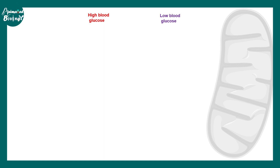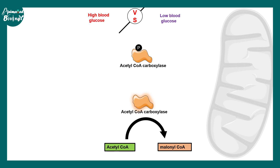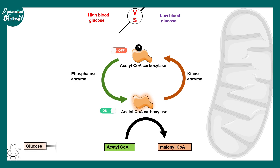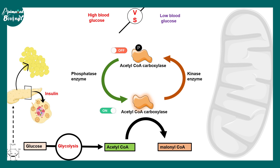When it comes to fat metabolism, insulin and glucagon again have different roles. With high blood glucose after a meal, insulin is high, and fatty acid biosynthesis takes place — anabolism occurs. The key enzyme is acetyl-CoA carboxylase, which converts acetyl-CoA to malonyl-CoA. The phosphorylated form is inactive and the non-phosphorylated form is active. When glucose is high, glycolysis produces a lot of acetyl-CoA, and insulin triggers phosphatase enzyme activity, producing more malonyl-CoA via acetyl-CoA carboxylase. So insulin triggers the fatty acid biosynthesis pathway.